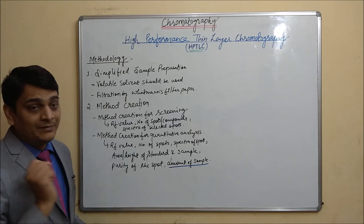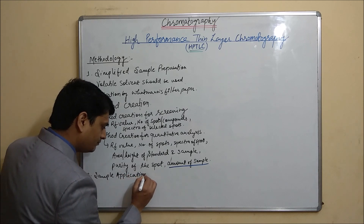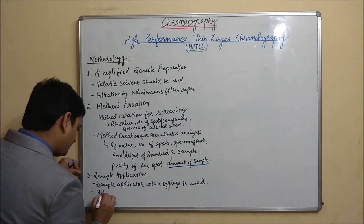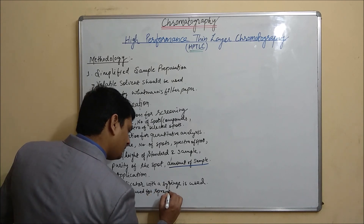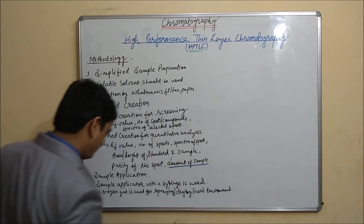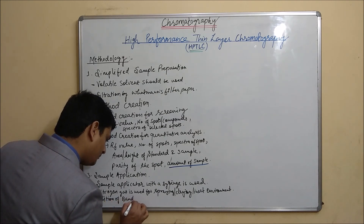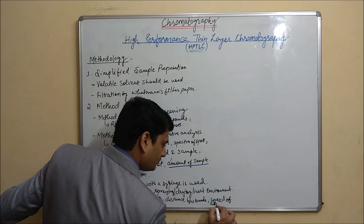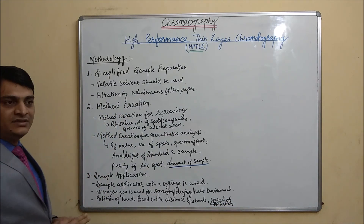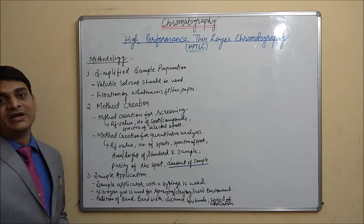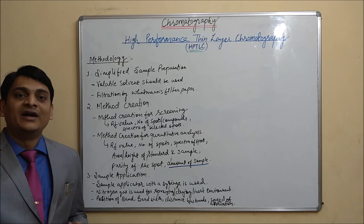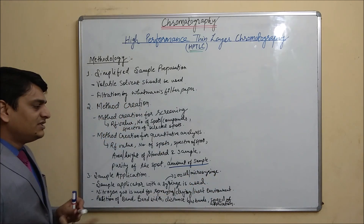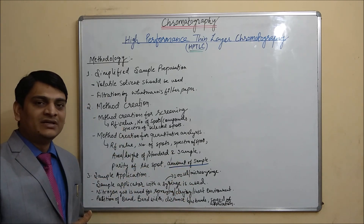The third step is sample application. For sample application in HPDLC, we use a microsyringe of 100 microlitre capacity. By using this microsyringe, we can apply one microlitre of sample onto the HPDLC plate.